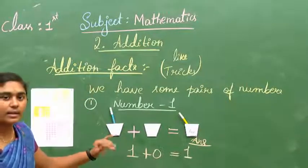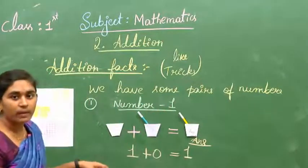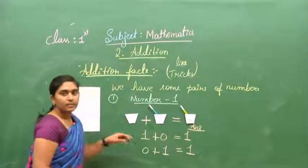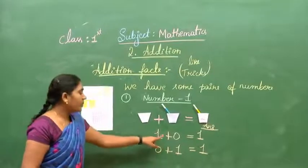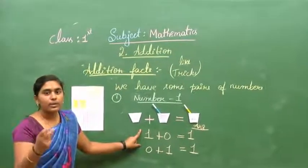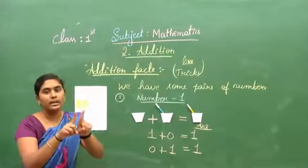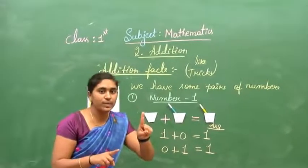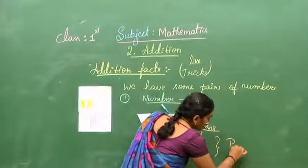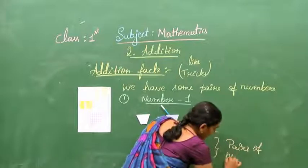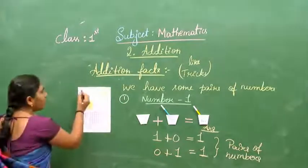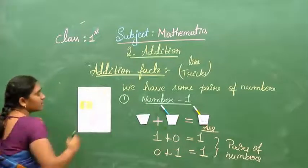I can write this another way: I move the pen to the 2nd cup — 0 plus 1 equals 1. These are addition facts for number 1: 1 plus 0 is 1, and 0 plus 1 is also 1. These are 1 pair of numbers — just like a pair of shoes has 2 shoes, we have 1 pair of facts for number 1.